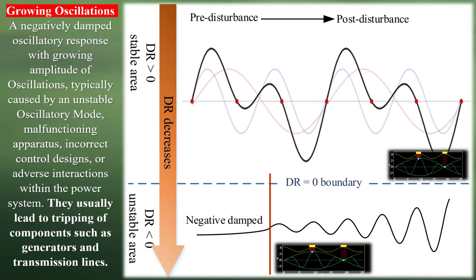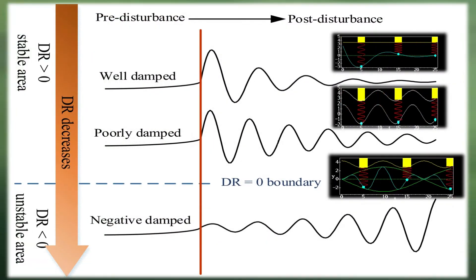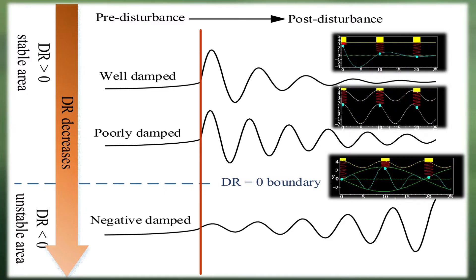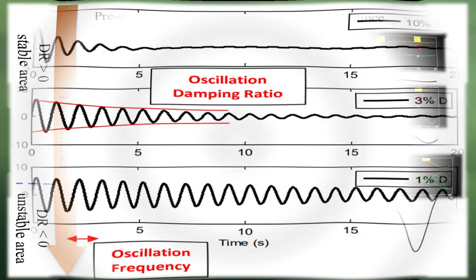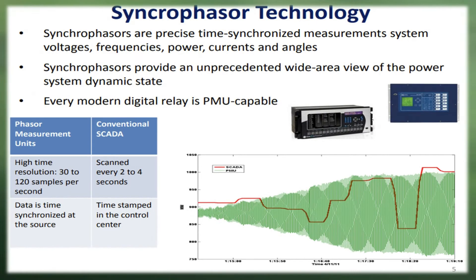Synchrophasor technology is the best tool to find power system oscillation. Synchrophasors are time-synchronized electrical measurements that represent both the magnitude and phase angle of electrical sinusoids. They are measured by fast time-stamped devices called phasor measurement units, or PMUs. PMUs are 100 times faster than traditional supervisory control and data acquisition, SCADA, systems. Synchrophasors constitute the basis of real-time monitoring and control actions in the electric grid, providing enhanced situational awareness capabilities with many applications in power systems.